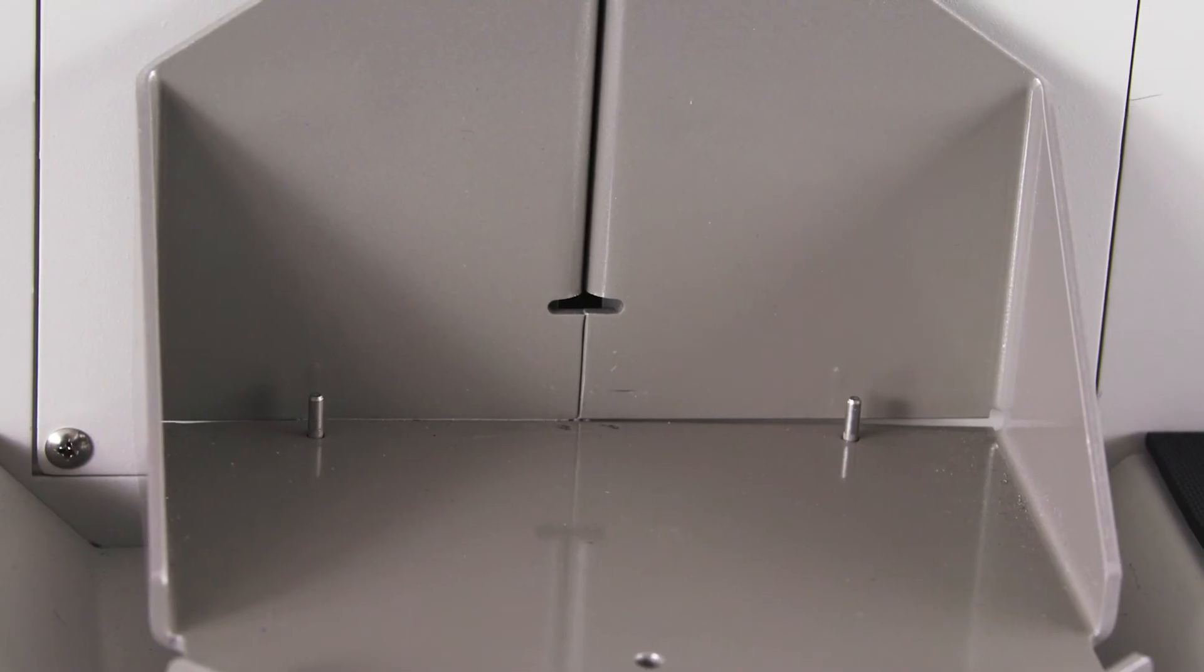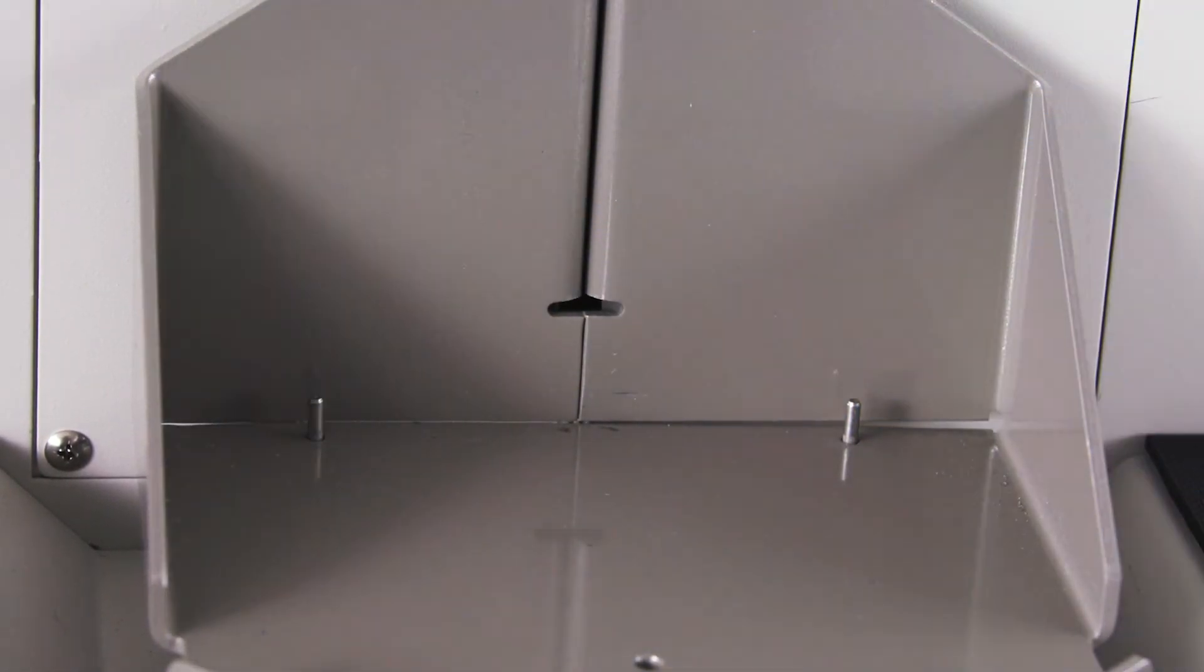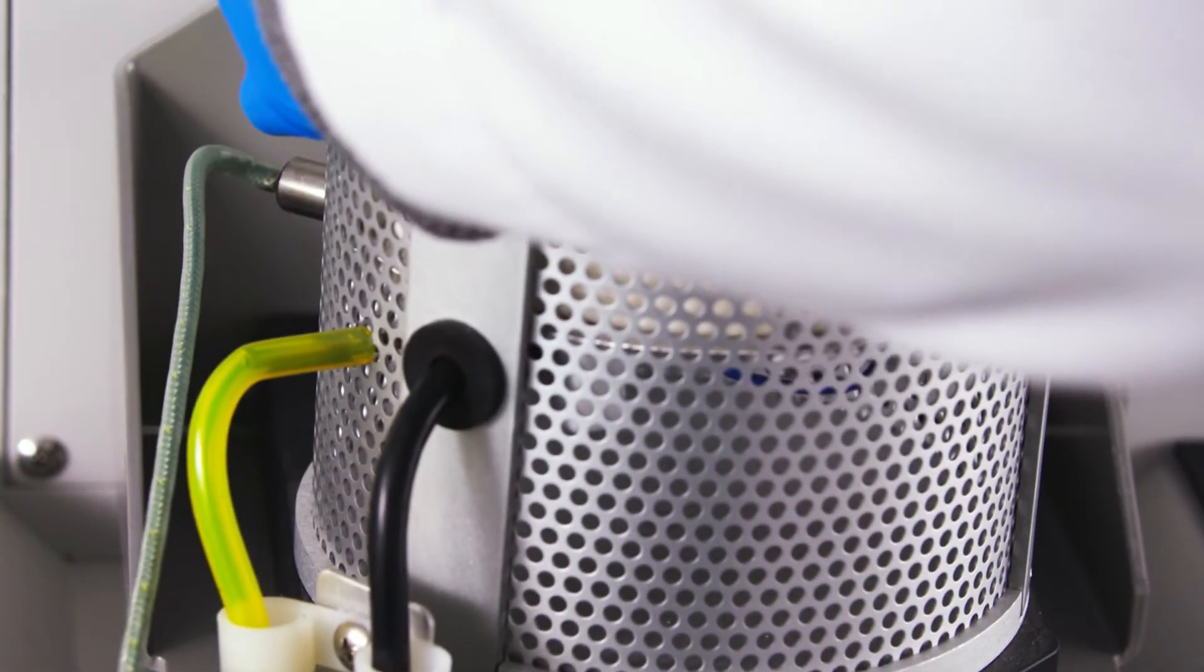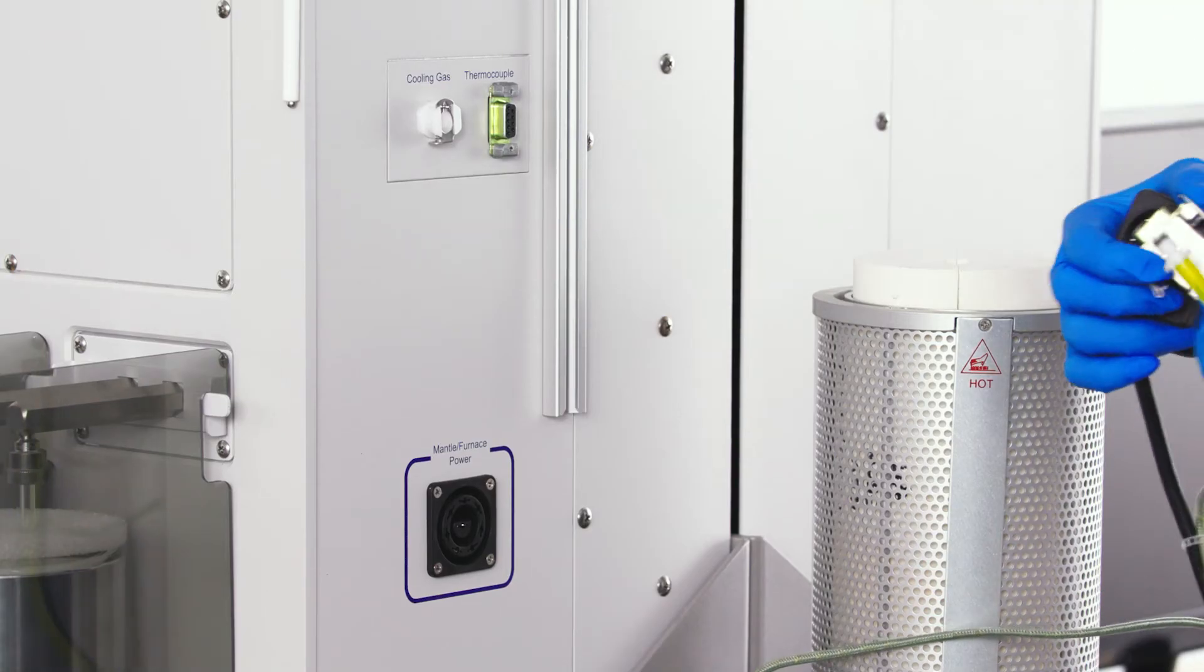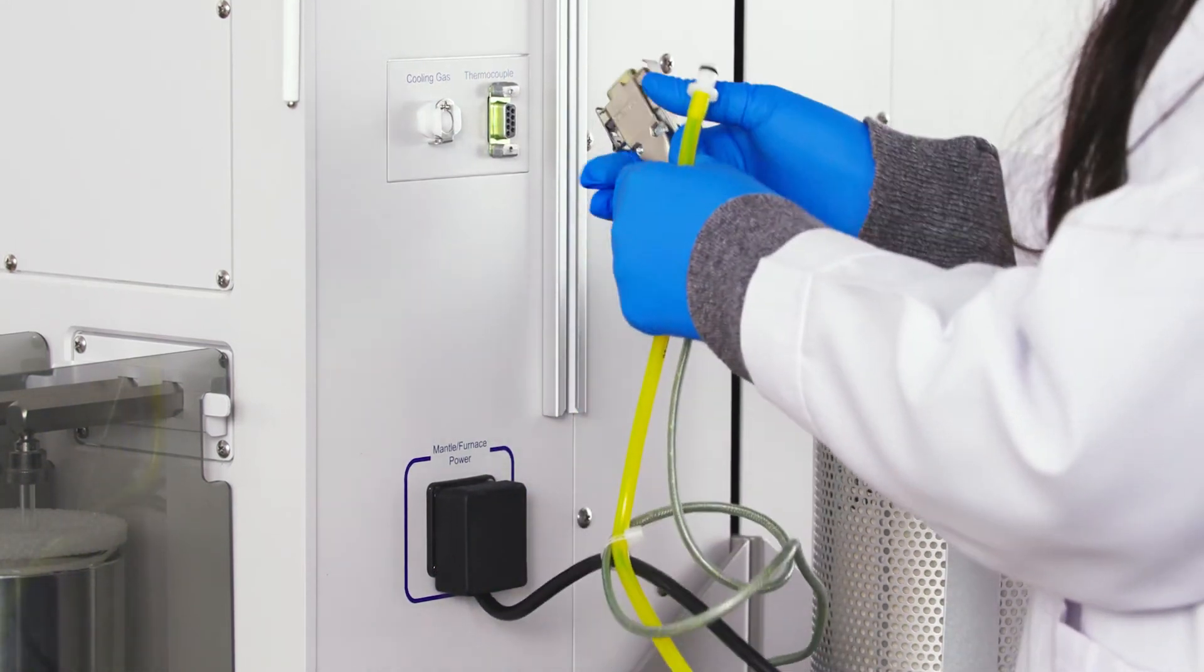Set the furnace on the instrument elevator. There are two pinholes on the platform of the furnace that align with the two pins on the elevator. Attach the furnace power outlet, thermocouple, and cooling air connector to the instrument.